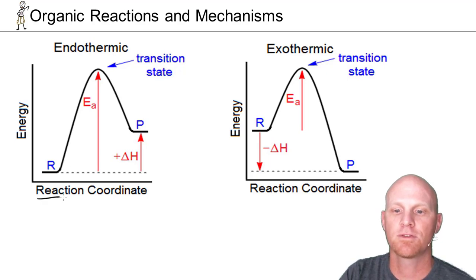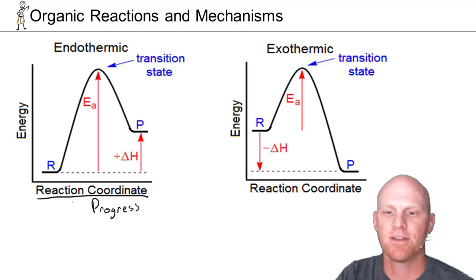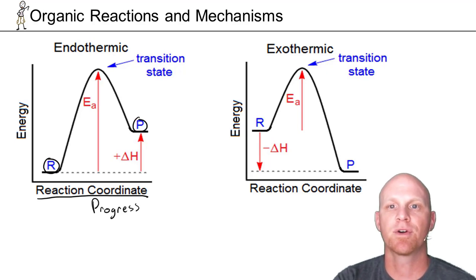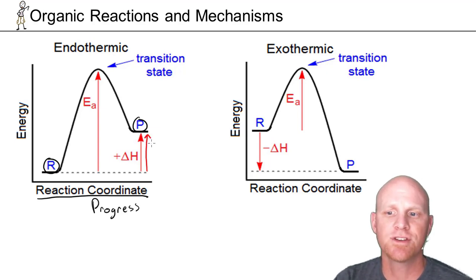We're going to start here with these reaction coordinate diagrams. Sometimes you'll see these called the reaction progress diagram. This basically just follows a reaction as we go from reactants to products, just kind of an energy profile. You can see that we've always got an energy barrier to cross as we go from reactants to products. But independent of that barrier, just the difference in energy from reactants to products, that's delta H, your changing enthalpy. We often just think of that as the heat of the reaction.